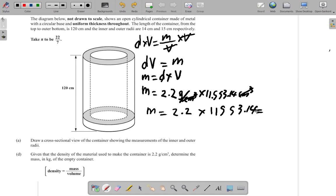Complete that, multiply it and see what you get. 2.2 times 11553.14 equals - and I get 25416.9. So 2.2 times 11553 I got 25416.9 grams. Now what they said was determine the mass in kilograms, so how many kilograms is this?